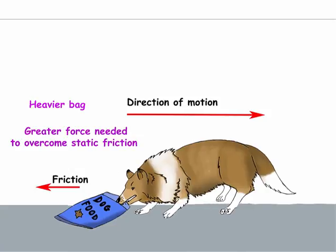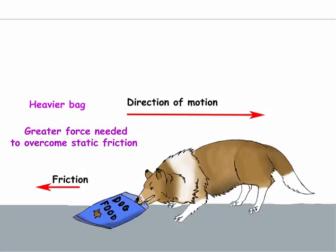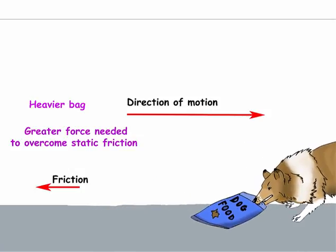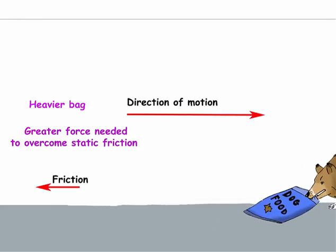But let's say the bag is very heavy. Then the dog must apply a greater force to overcome the static friction in this case by pulling harder backwards. Because the bag is heavier, it presses more firmly against the ground, which causes more friction force.